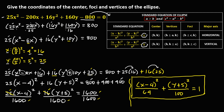To find the center, foci, and vertices, note that in an ellipse a is greater than b, and a and b correspond to the denominators. Since 100 is greater than 64, a² equals 100 and b² equals 64. Therefore this ellipse is a vertical ellipse, because a² is the denominator of y².